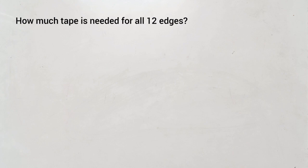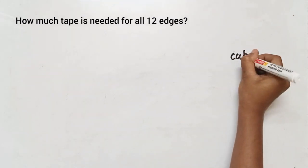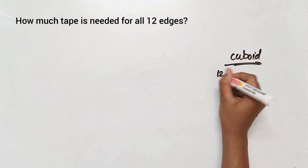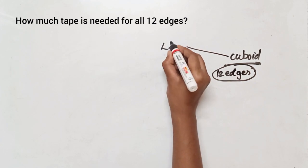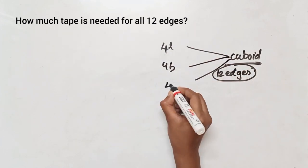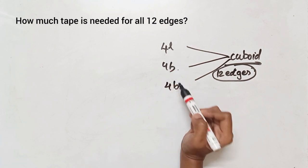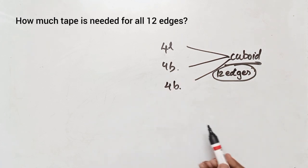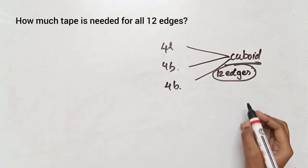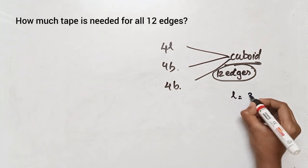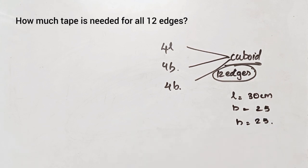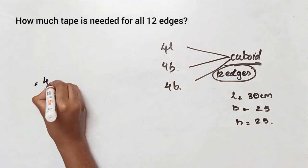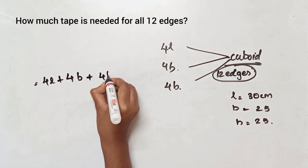The second part of the question asks: how much tape is needed for all 12 edges? For a cuboid, we have 4 lengths, 4 breadths, and 4 heights. So the total edges equal 4L plus 4 breadth plus 4 height.